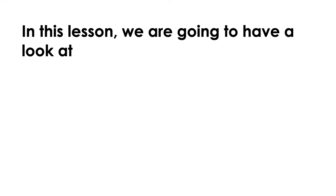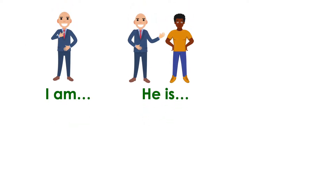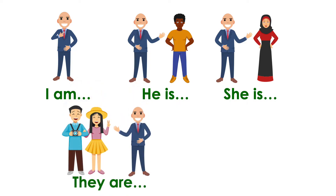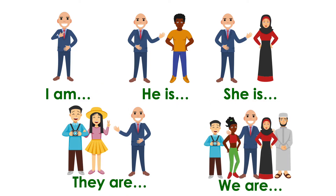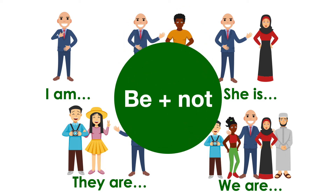In this lesson, we are going to have a look at negative present simple be verbs. We say I am, he is, she is, they are, and we are. To make them negative, we add 'not' to the be verb.